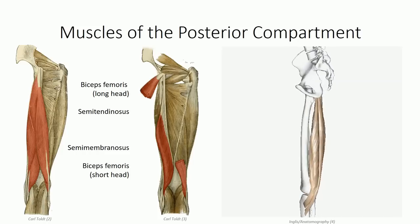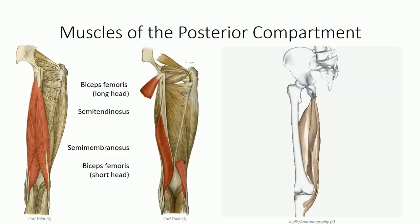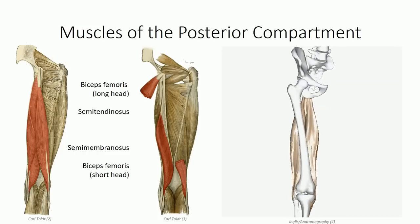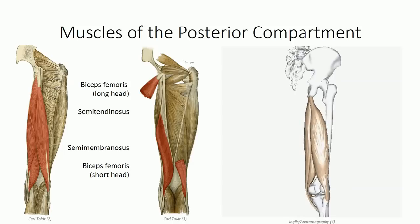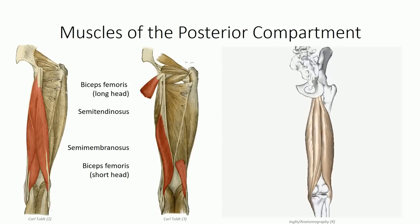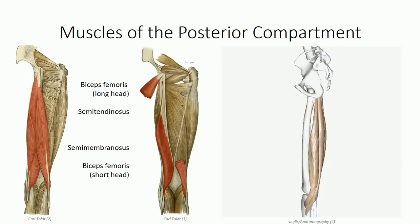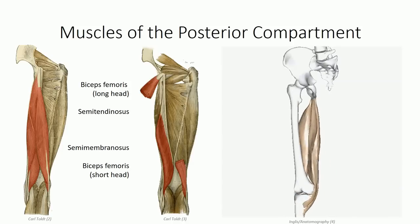The three muscles share a common function as well as a common innervation. Two of the muscles insert medially, while the bicipital muscle fuses laterally.